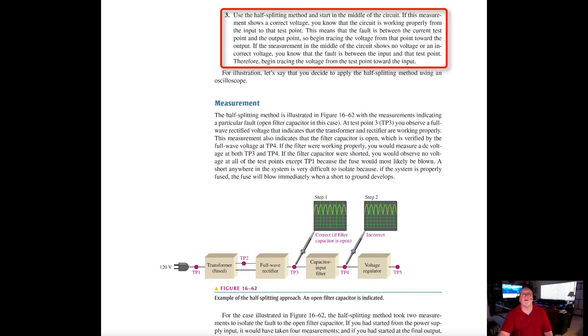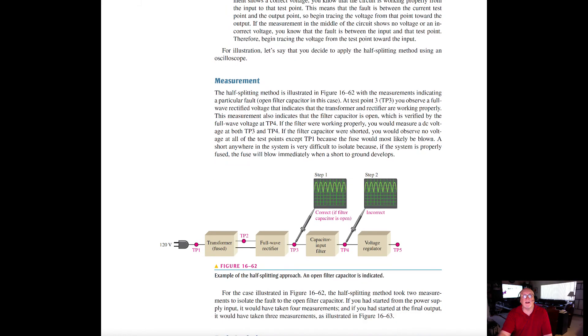Step 3: use the half splitting method and start in the middle of the circuit. If this measurement shows a correct voltage, you know that the circuit is working properly from the input to that test point. This means that the fault is between the current test point and the output point. Begin tracing the voltage from that point toward the output. If the measurement in the middle of the circuit shows no voltage or an incorrect voltage, you know the fault is between the input and the test point. Therefore, begin tracing the voltage from the test point toward the input.